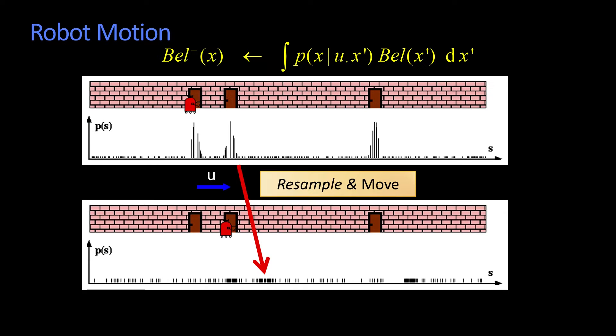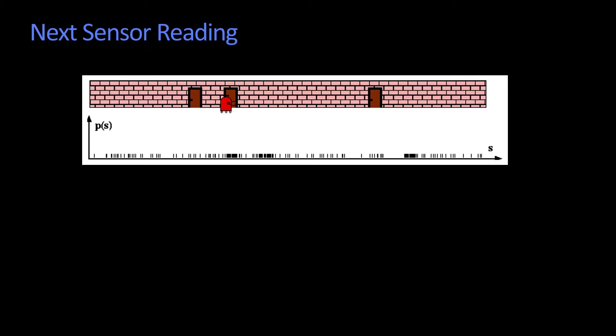Now I take another sensor reading. By the way, I just copied over, see the density on the bottom? I just copied over, that's the belief that the robot has.